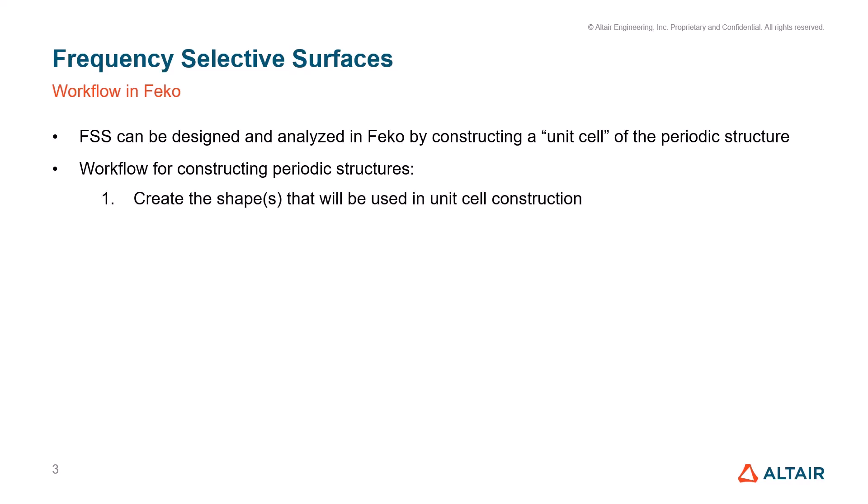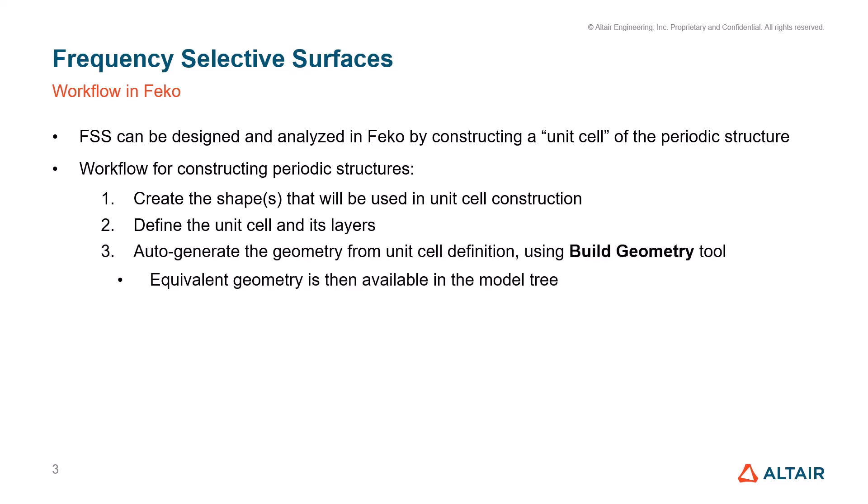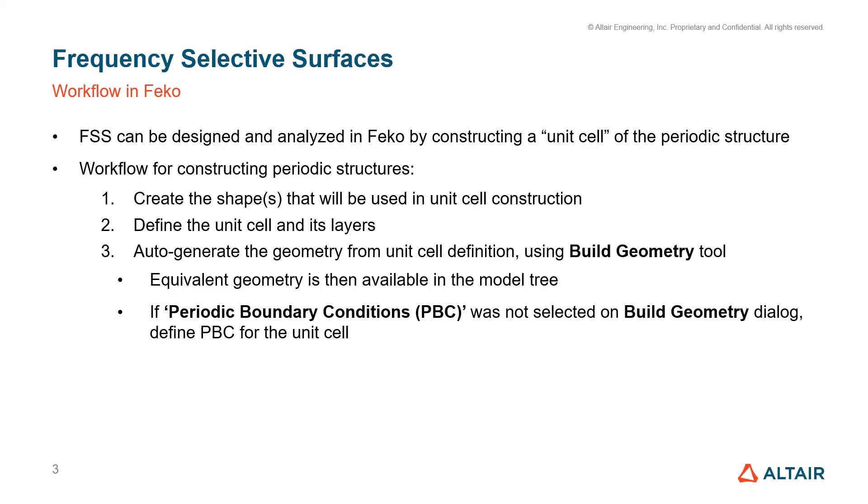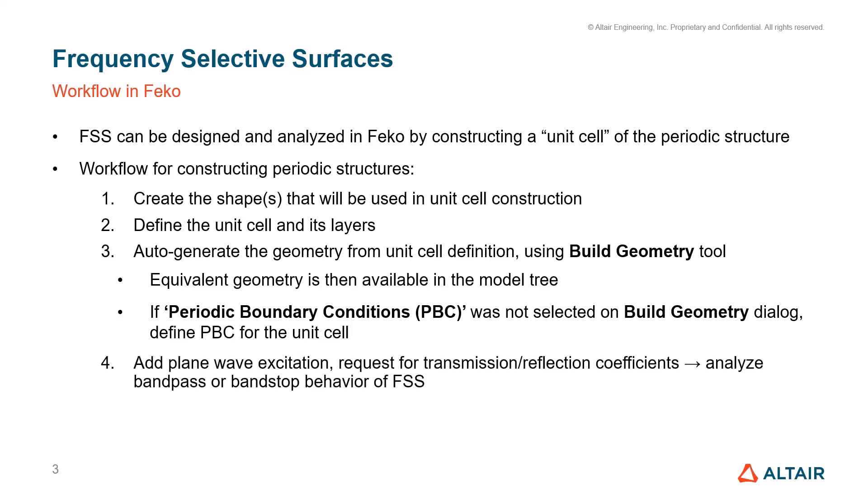To put the workflow into steps: we first start by creating the shape of the geometry to be used in unit cell construction, then we define the unit cell. Next, the geometry is generated from the unit cell, at which stage we have the option to automatically apply the periodic boundaries or manually define them. Once the periodic boundaries are defined, we add a plane wave excitation and then request transmission and reflection coefficients before running the simulation.